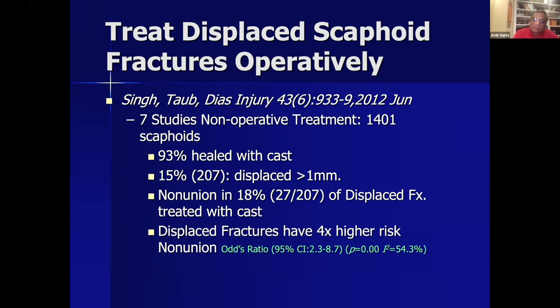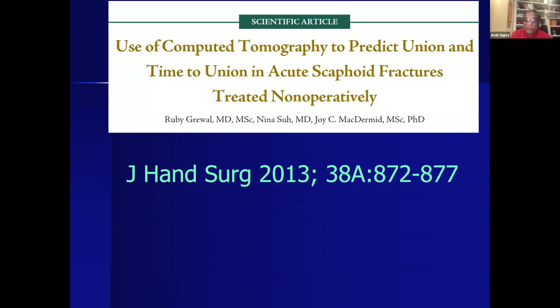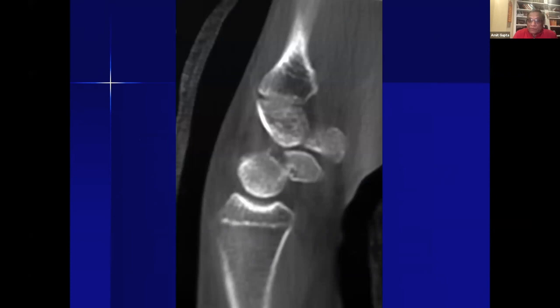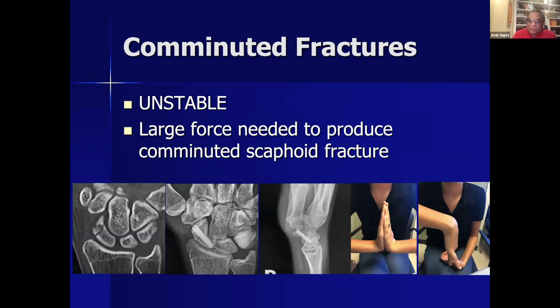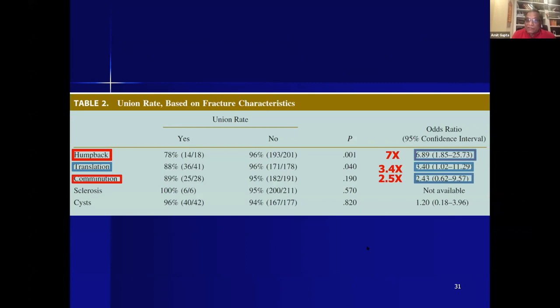Humpback deformity has a seven times rate of non-union, translation is 3.4 times rate of non-union, and comminution is 2.5 times rate of non-union. Regarding unstable fractures: McLaughlin in 1954 and Herbert and Fisher in 1984 talked about the vertical oblique type of fracture, which displaces — because while a transverse fracture can compress, a vertical oblique fracture allows the ends to displace.